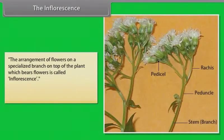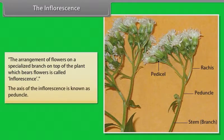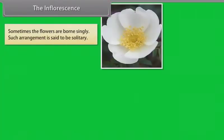The inflorescence is the arrangement of flowers on a specialized branch on top of the plant which bears flowers. The axis of the inflorescence is known as peduncle. Sometimes the flowers are borne singly; such arrangement is said to be solitary.